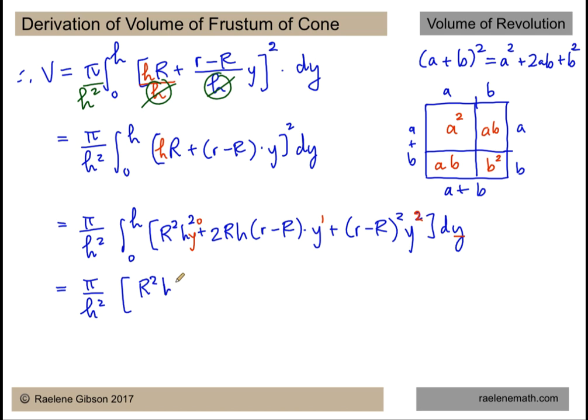We get R²h² times y to the one plus 2Rh times (r-R) times y to the exponent two over two, and then plus (r-R)² times y to the exponent three over three. And we don't have any dy left because we've performed the instructions of integration. We just now need to evaluate.